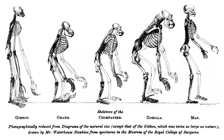In the 1740s, the French mathematician Pierre-Louis Maupertuis made the first known suggestion that all organisms had a common ancestor, and had diverged through random variation and natural selection.